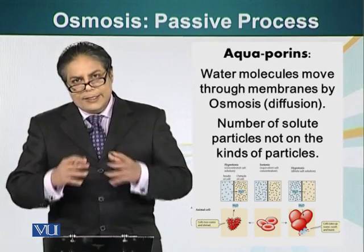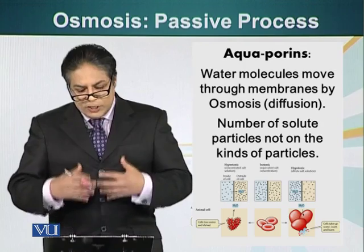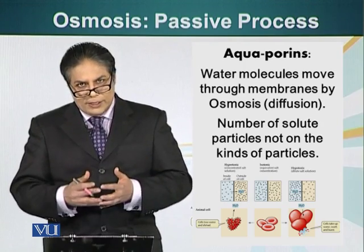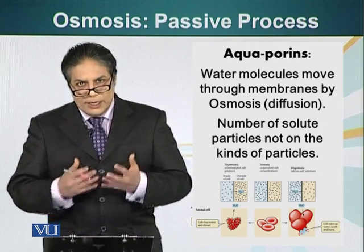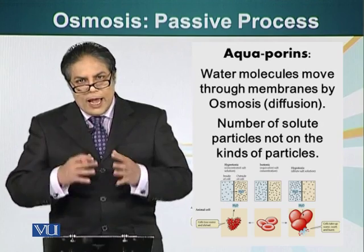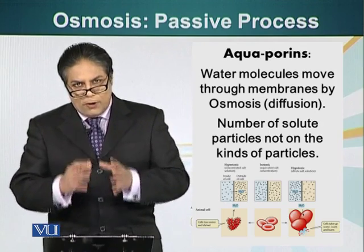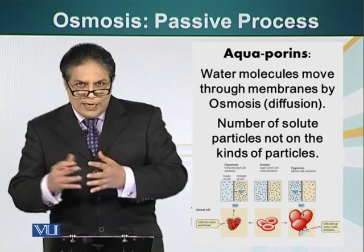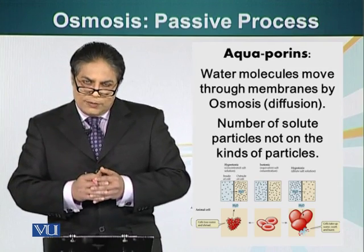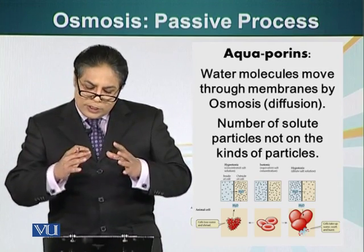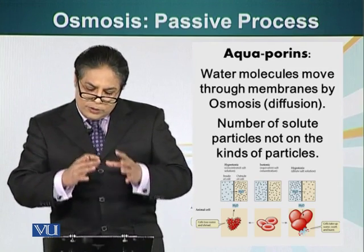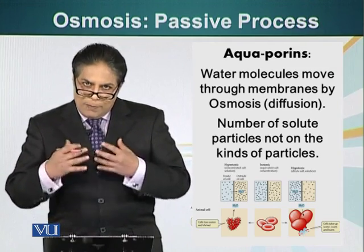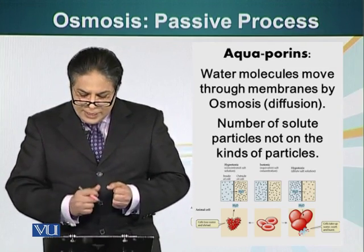This is a process which generates randomness — entropy is increasing — and it is a favored process because of how it affects free energy. Systems that generate randomness are preferred in nature.